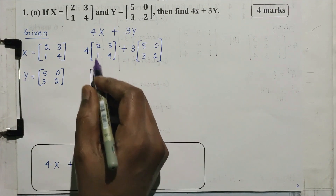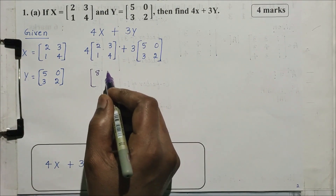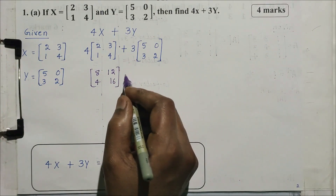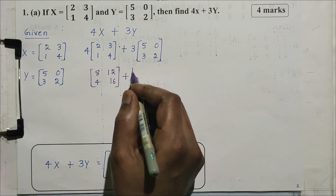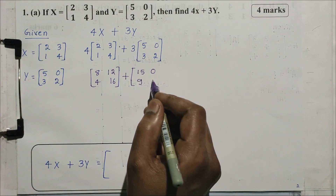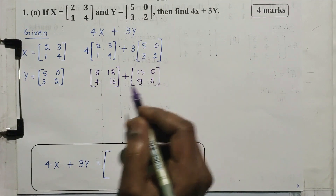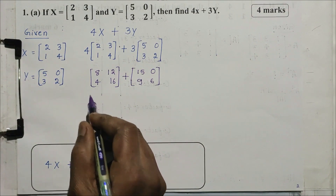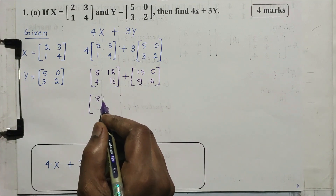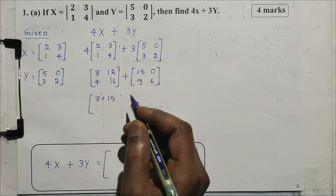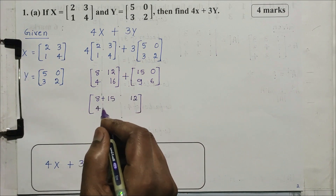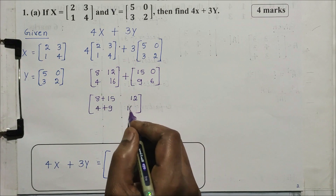So first note: 4x means 4 multiplied into matrix x — 4×2=8, 4×3=12, 4×1=4, 4×4=16 — bracket close. Plus 3y means 3×5=15, 3×0=0, 3×3=9, 3×2=6 — bracket close. Next, add the two matrices, corresponding elements: 8+15, 12+0, 4+9, 16+6.